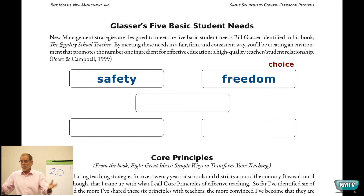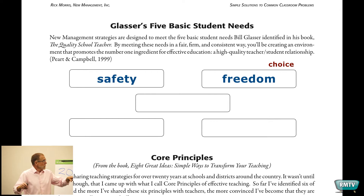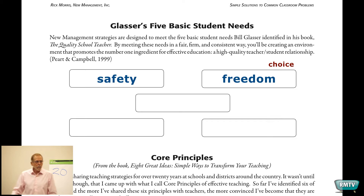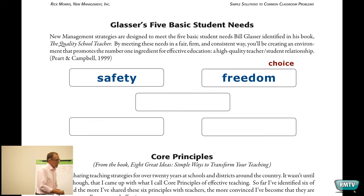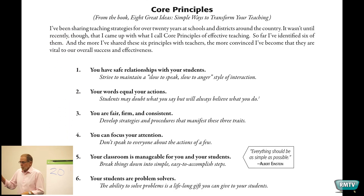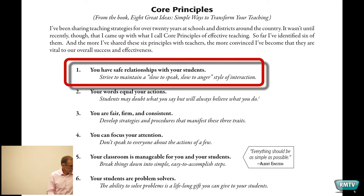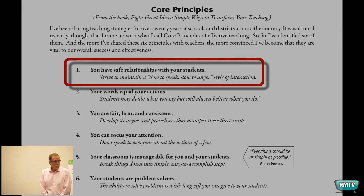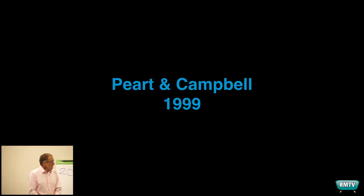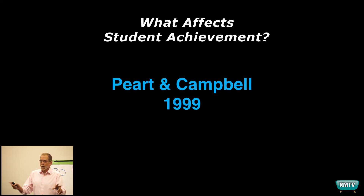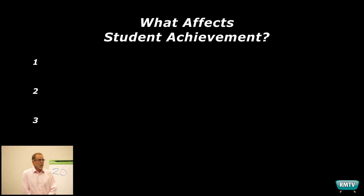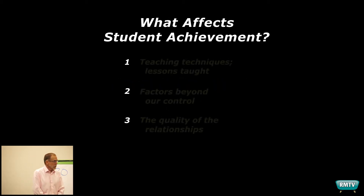Allowing kids to make choices builds character better even than a character ed program. Now let's talk about the core principles — specifically number one and why it's number one according to the research. Marzano and Campbell did a huge study on student achievement and found out there are three really big things that impact achievement.